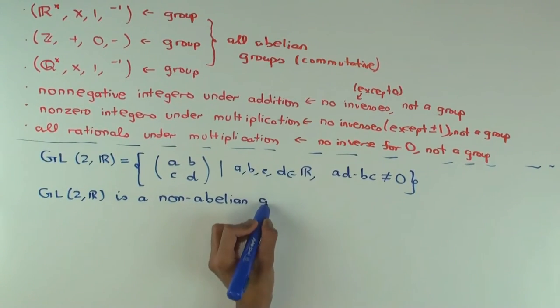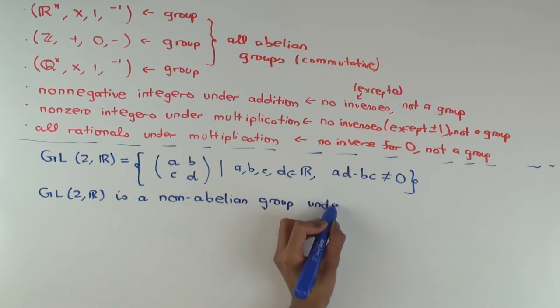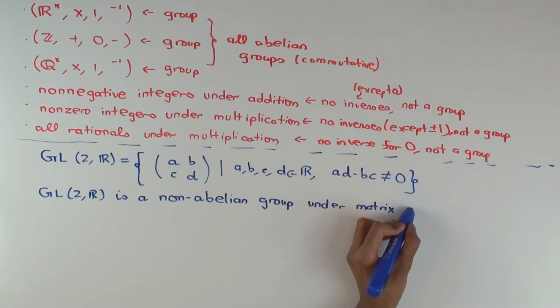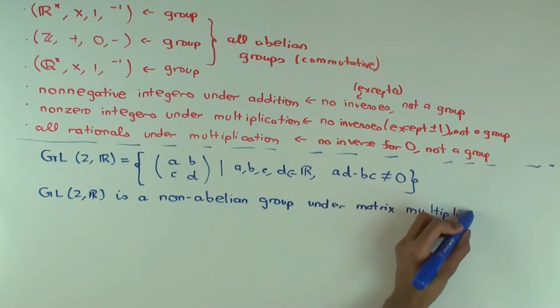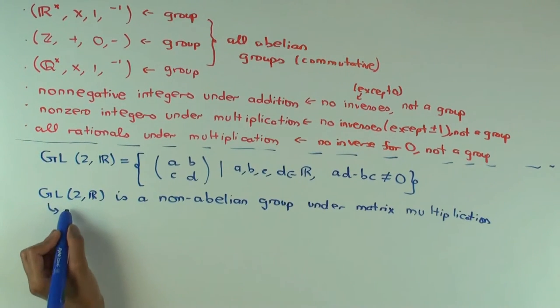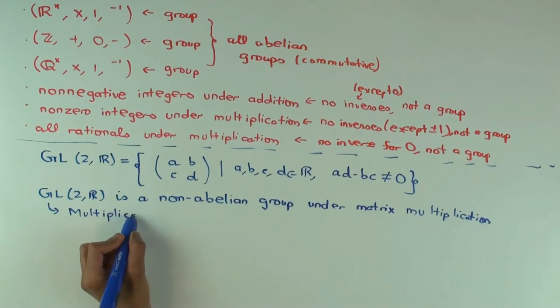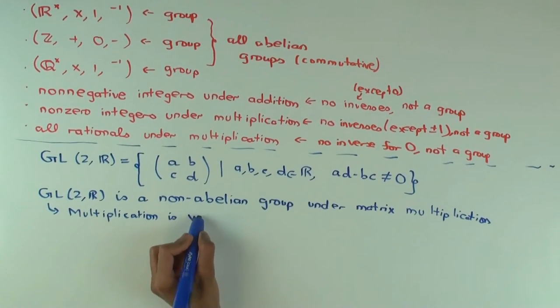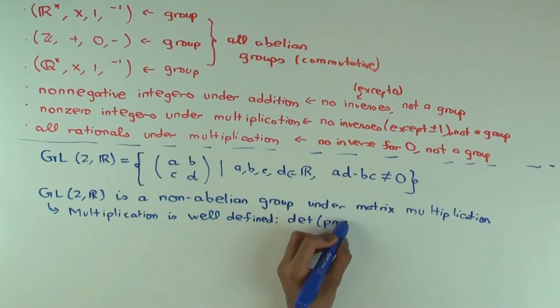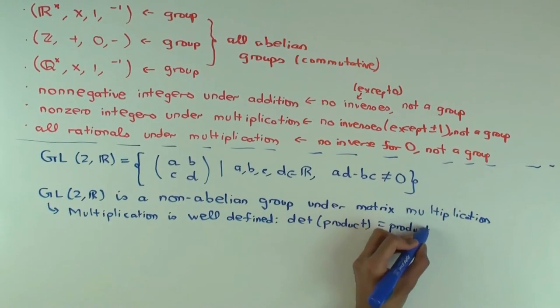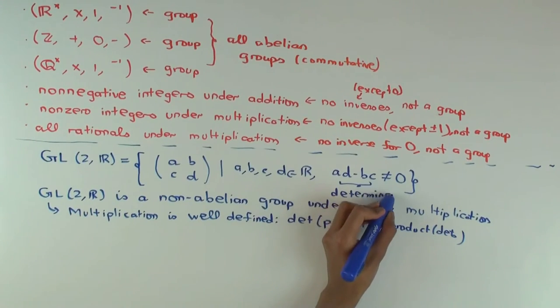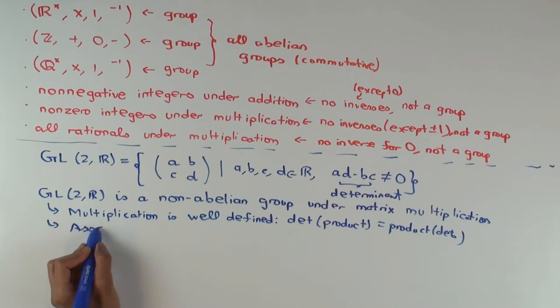Well, you have to first check that when you multiply two things here, you do get something in here. Why is that true? So a product of two 2x2 matrices is 2x2 matrices, but you also have to check that when you take the product, this condition is satisfied with the product as well. What do you know about determinants and products? The determinant of a product is the product of the determinant. Yes. So it's closed under multiplication. So multiplication is well defined. Because the determinant of a product is the product of the determinant. So if you have two things with non-zero determinants, then the product also has non-zero determinant. It is associative. You can actually check matrix multiplication in general is associative.